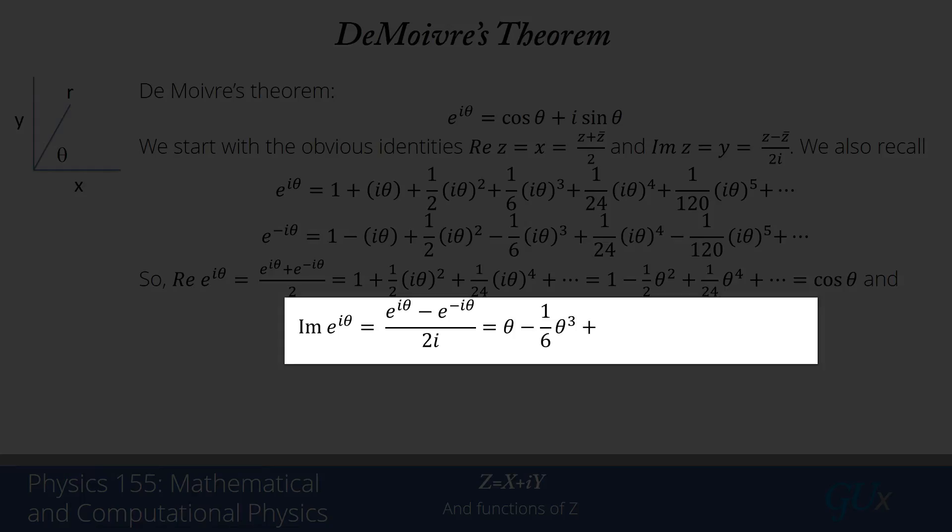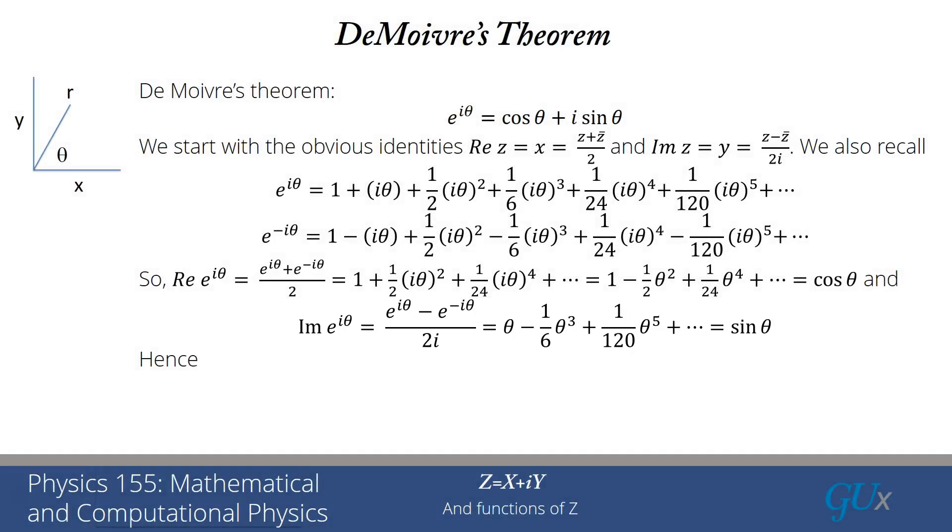Similarly, we can work with the imaginary part. Now all the odd powers survive. Taking out that factor of i and doing the division, we get theta minus 1 sixth theta cubed plus 1 over 120 theta to the fifth and so forth. That's the Taylor series expansion for sine theta. We learn these two identities: cosine theta is e to the i theta plus e to the minus i theta over 2, and sine theta is e to the i theta minus e to the minus i theta over 2i. Really useful identities. The more you can recognize and use these, the easier you'll find different kinds of algebra.